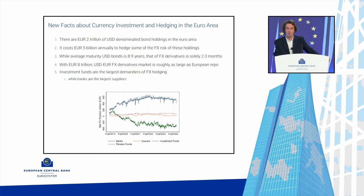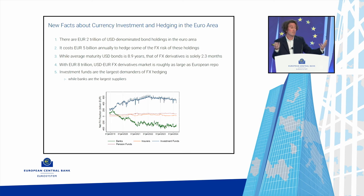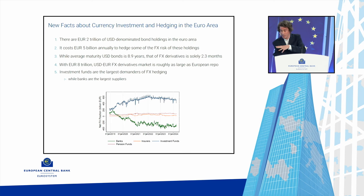Looking at the net FX position by sector: the more positive the position, the more you are a demander of the hedge; the more negative, the more you are on the supply side. Investment funds dominate the positive territory and are the main demanders, partly due to their sheer size. The main suppliers are banks, including some foreign banks in our data, shown as the green line in negative territory.